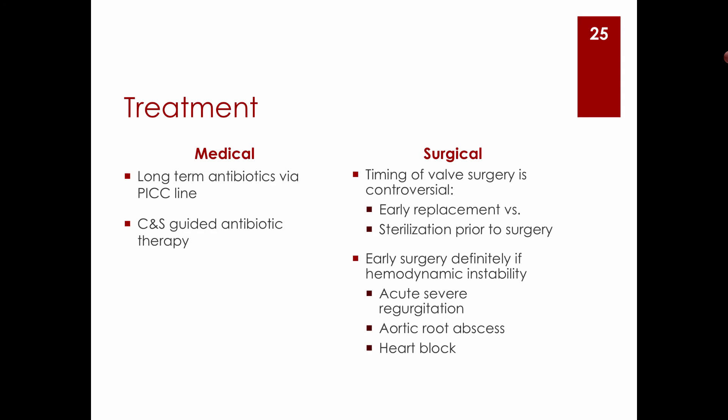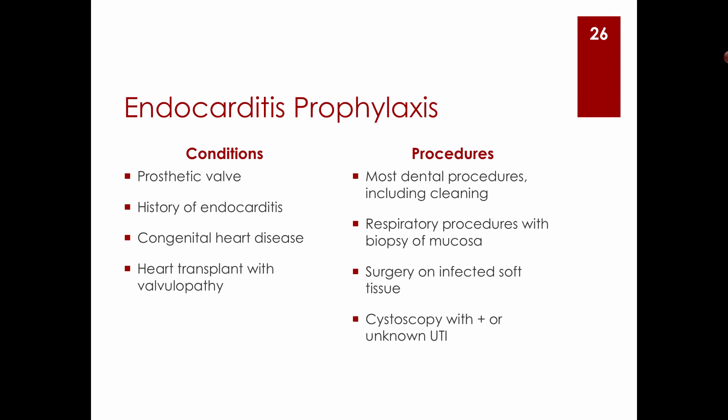More surgeons are opting for early replacement, but the concern is that replacing the valve while infection is still present risks infecting the prosthetic valve — a very serious complication. However, there is no debate when a patient is hemodynamically unstable: severe acute regurgitation, aortic root abscess causing heart block, or other urgent indications all require immediate surgery.